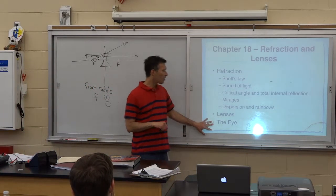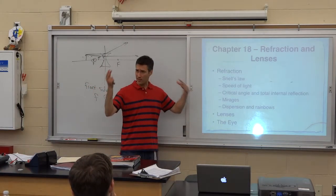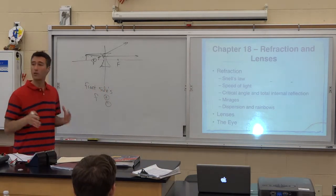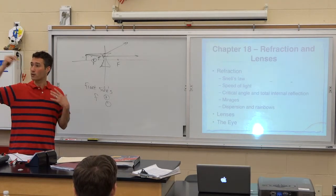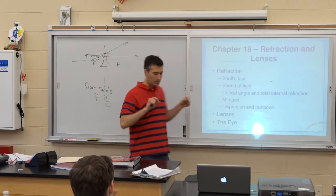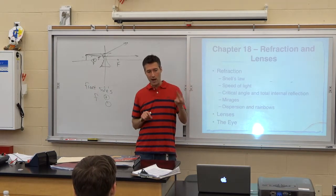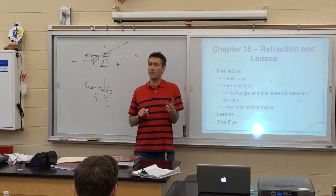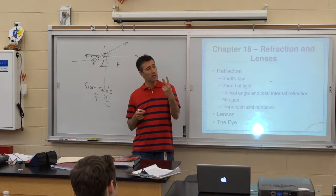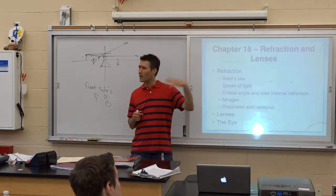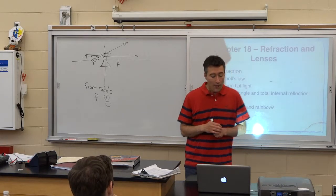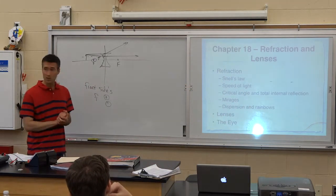We spent about 20 minutes talking about the eye and how it forms images. We need a focused image on our retina because the retina is where the light-sensitive cells are that communicate to our brain. There are two main eye parts that do refracting: the cornea and then the lens itself, which is internal to the eye. It's the cornea that actually does more of the refracting than the lens.